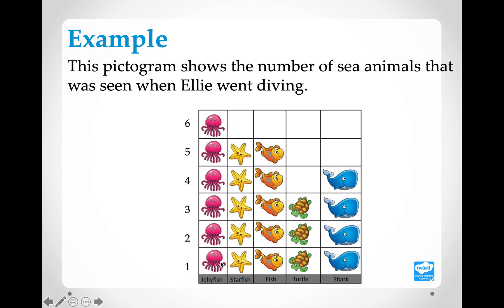Counting the jellyfish: 1, 2, 3, 4, 5, 6 — so six jellyfish. Now let us look at the starfish: 1, 2, 3, 4, 5 — five starfish.